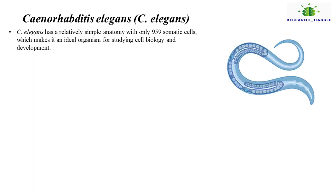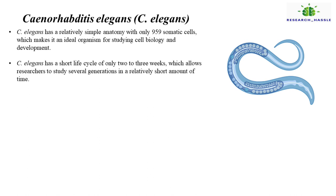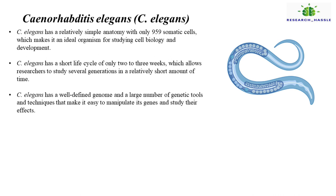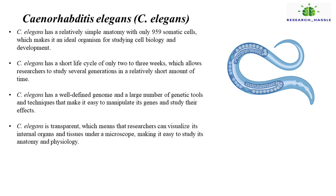C. elegans has a relatively simple anatomy with only 959 somatic cells, which makes it an ideal organism for studying cell biology and development. C. elegans has a short life cycle of only two to three weeks, which allows researchers to study several generations in a relatively short amount of time. C. elegans has a well-defined genome and a large number of genetic tools and techniques that make it easy to manipulate its genes and study their effects. C. elegans is transparent, which means that researchers can visualize its internal organs and tissues under a microscope, making it easy to study its anatomy and physiology.